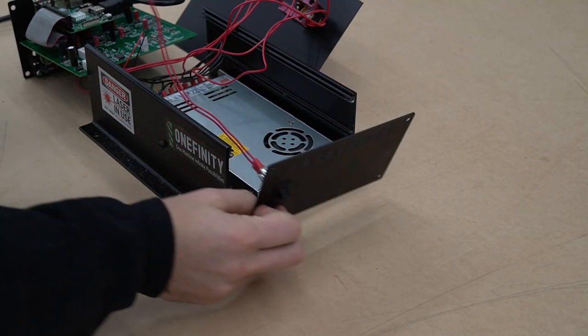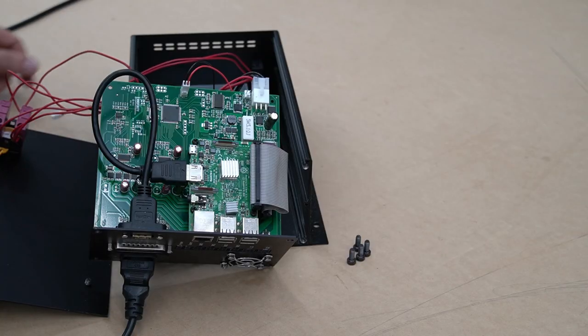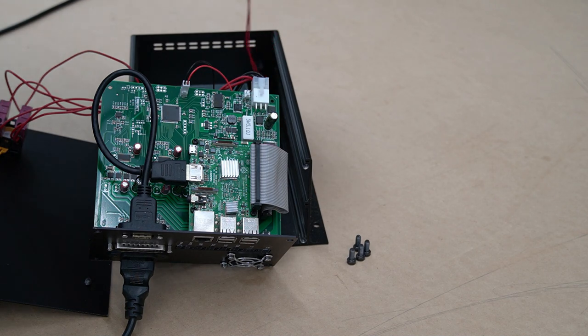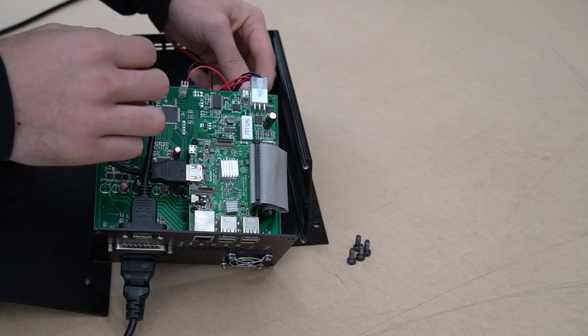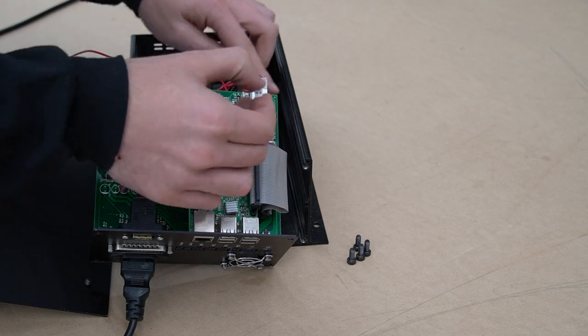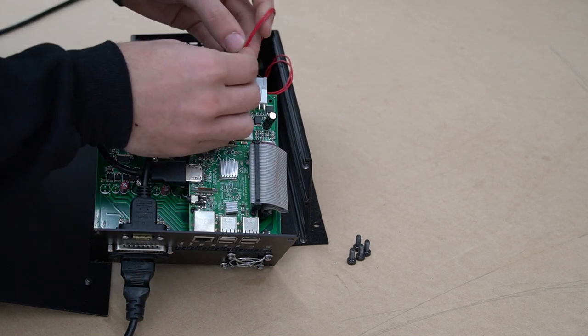With our power switch now seated in the face plate, we can remount the face plate to the controller box. With the face plate secured, we can now run our wire back to the controller board and attach it next to the power source.